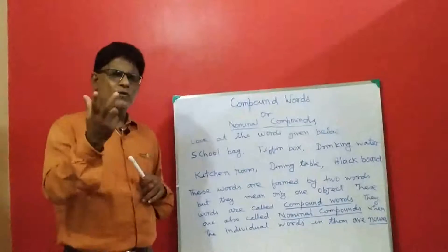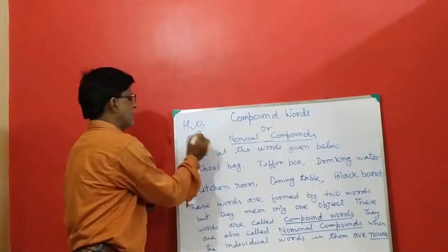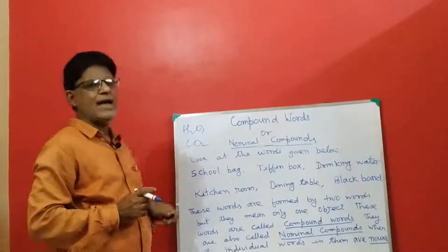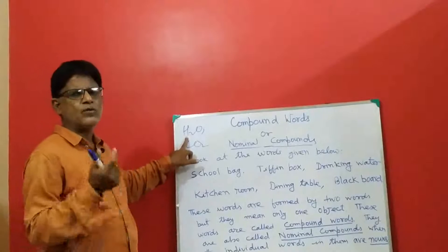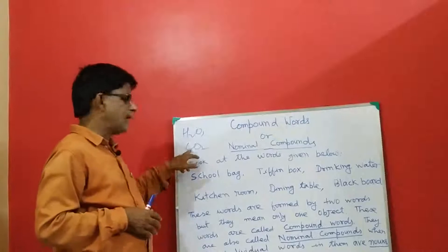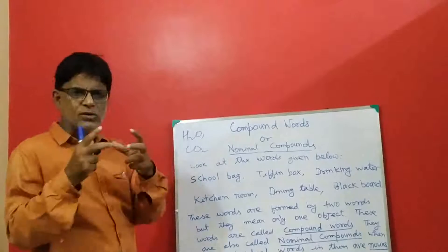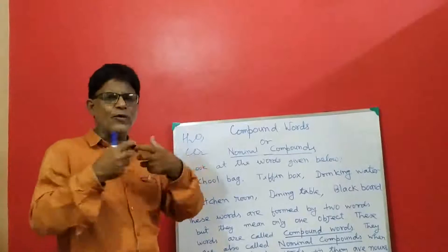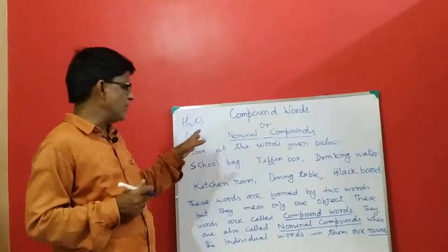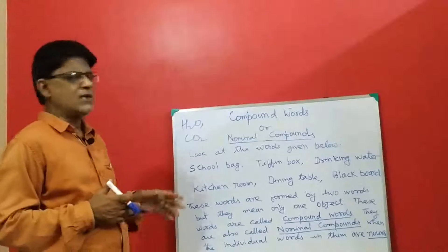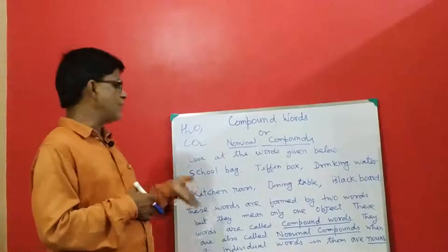I think you know the definition of a compound. In chemistry, water and carbon dioxide gas are called compounds. Water is composed of two elements: hydrogen and oxygen. And carbon dioxide is composed of carbon and oxygen. So two elements join to form a compound. Similarly, when you read compound words, you will find the same feature that is present in chemistry compounds.